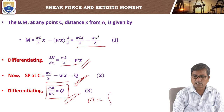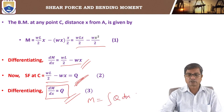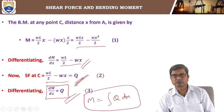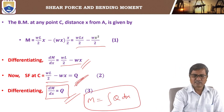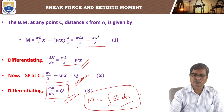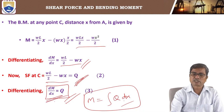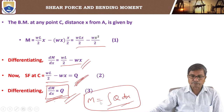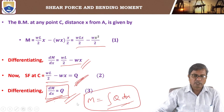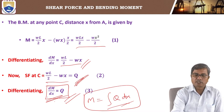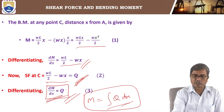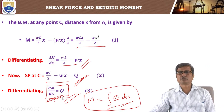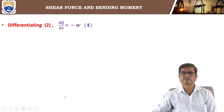From this, we can also write: bending moment M is equal to the integral of Q dx. The relation between bending moment and shear force is given by dM by dx equals the shear force Q at that section.